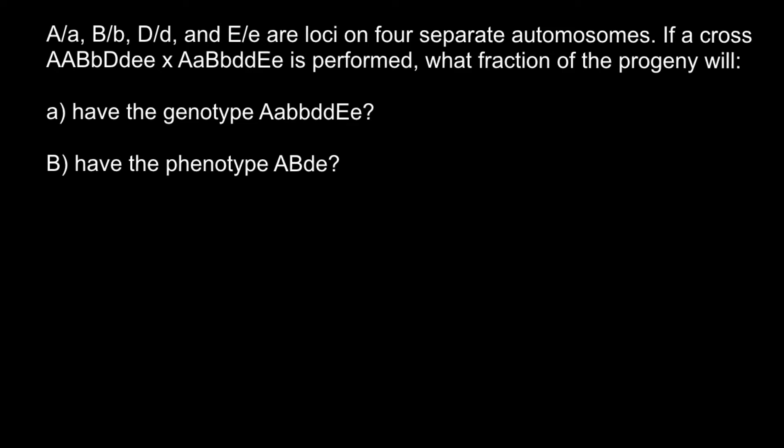Hello and welcome to Nikolai's genetics lessons. Today's problem: A, B, D and E are loci on four separate autosomes. If a cross of two genotypes is performed as follows, what fraction of the progeny will have the genotype as follows? So how are we going to solve this problem?